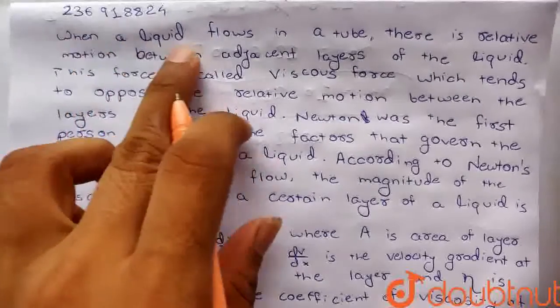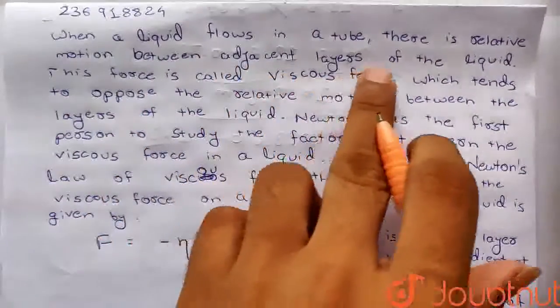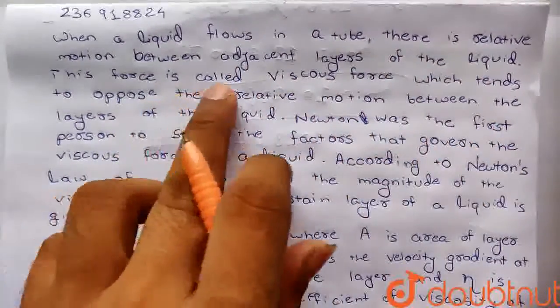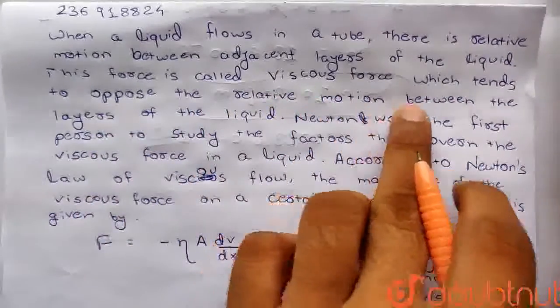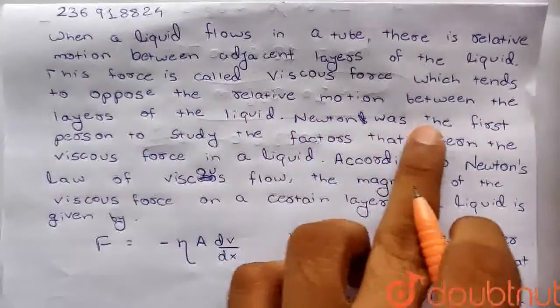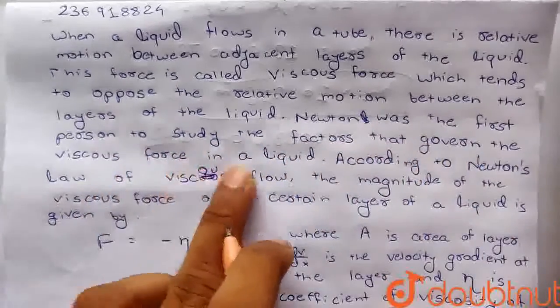You can ask me the question. When a liquid flows in a tube, there is relative motion between adjacent layers of the liquid. This force is called viscous force, which tends to oppose the relative motion between the layers of the liquid. Newton was the first person to study the factors that govern the viscous force in a liquid.